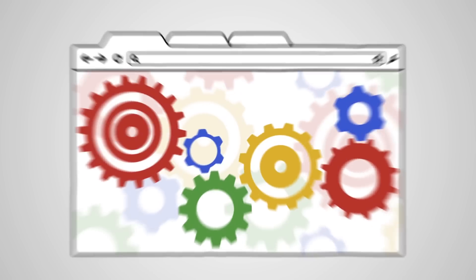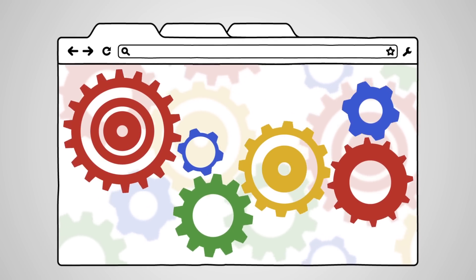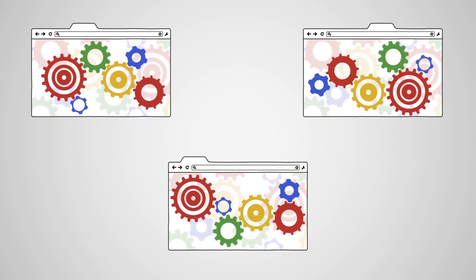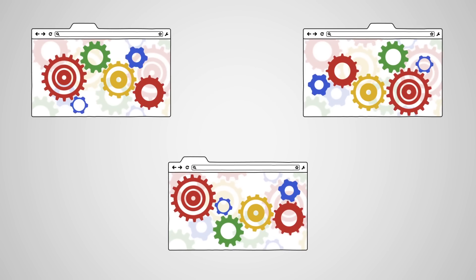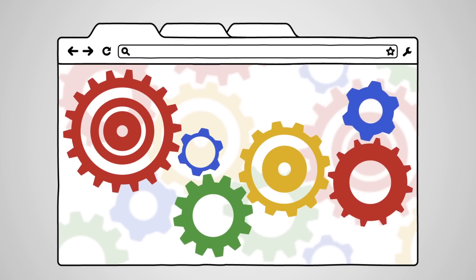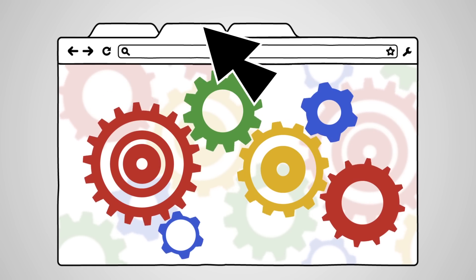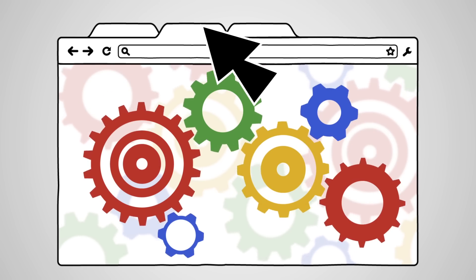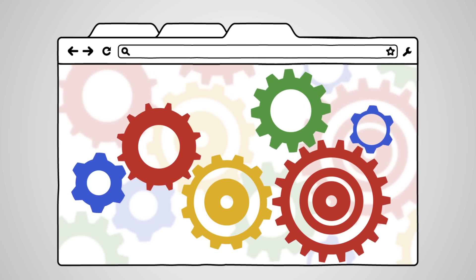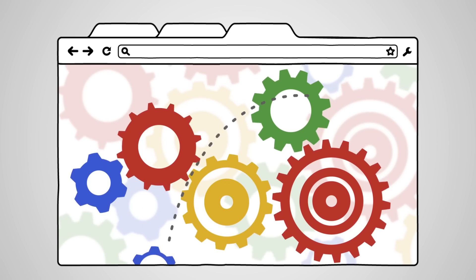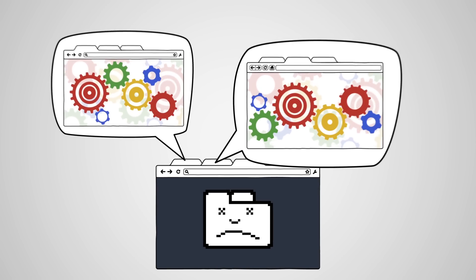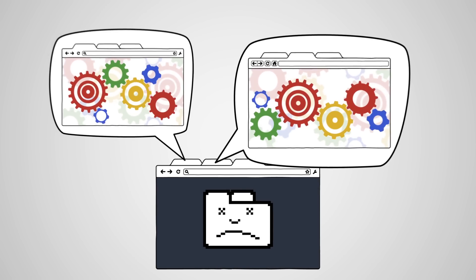In Chrome, every website or web application you open in the browser is a separate and independent process. For example, if you open three different websites in three different browser tabs, each tab you open corresponds to a separate process. So if one tab crashes, the browser and other tabs you have open shouldn't be affected.